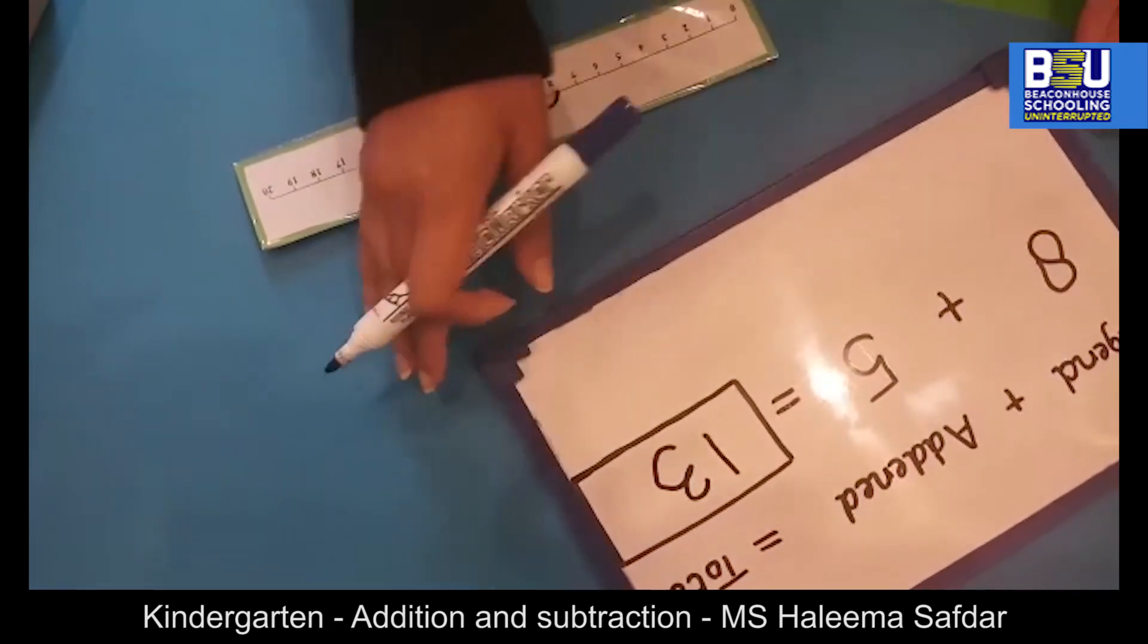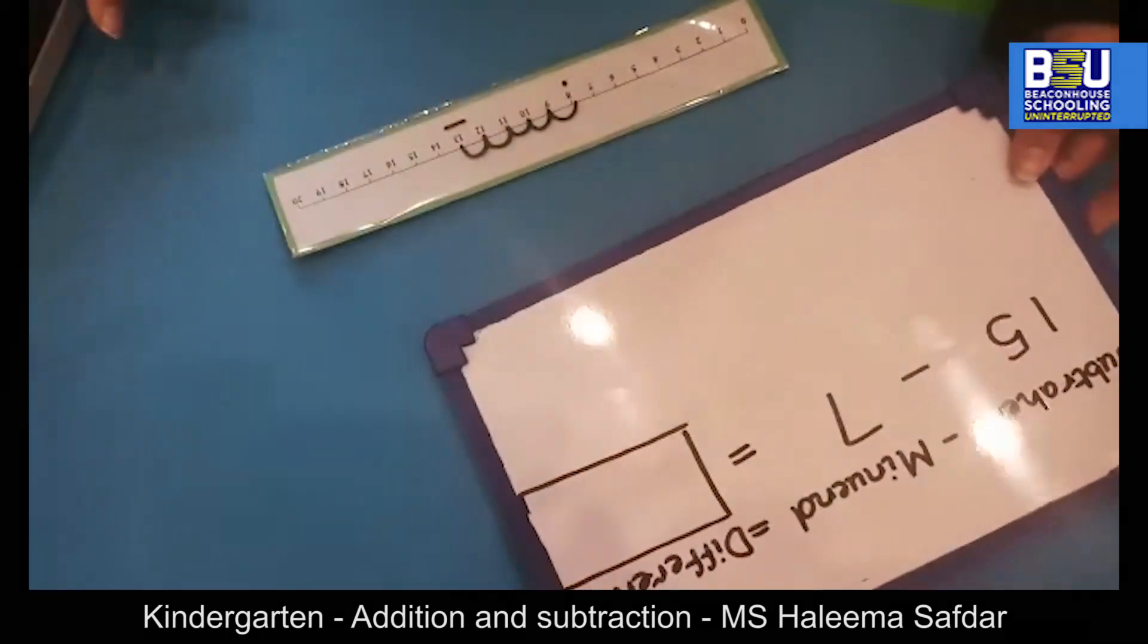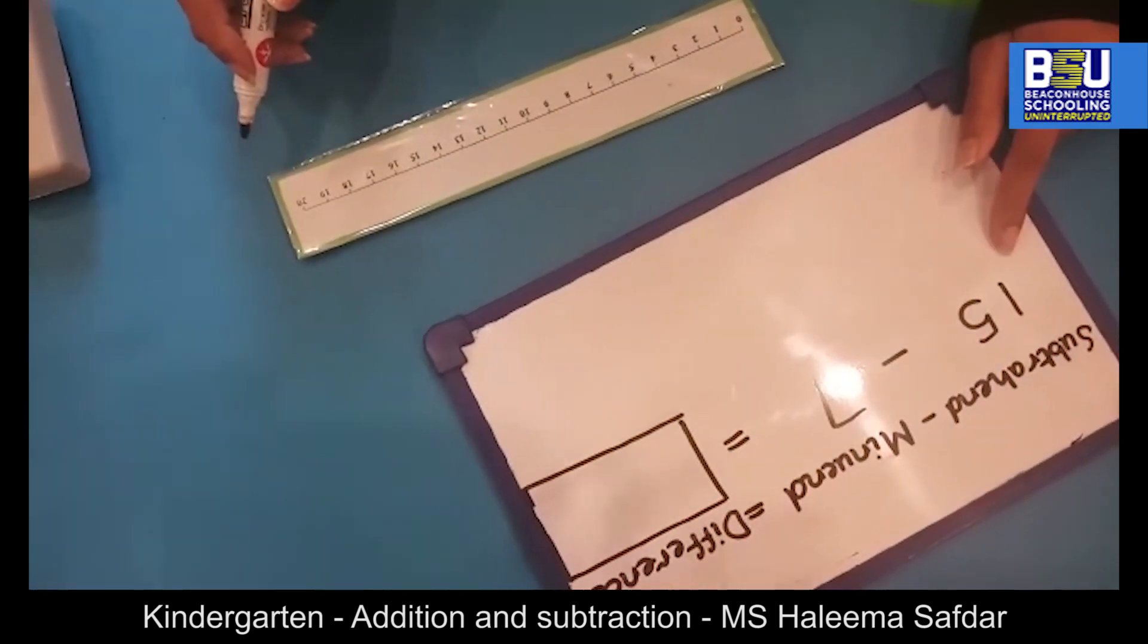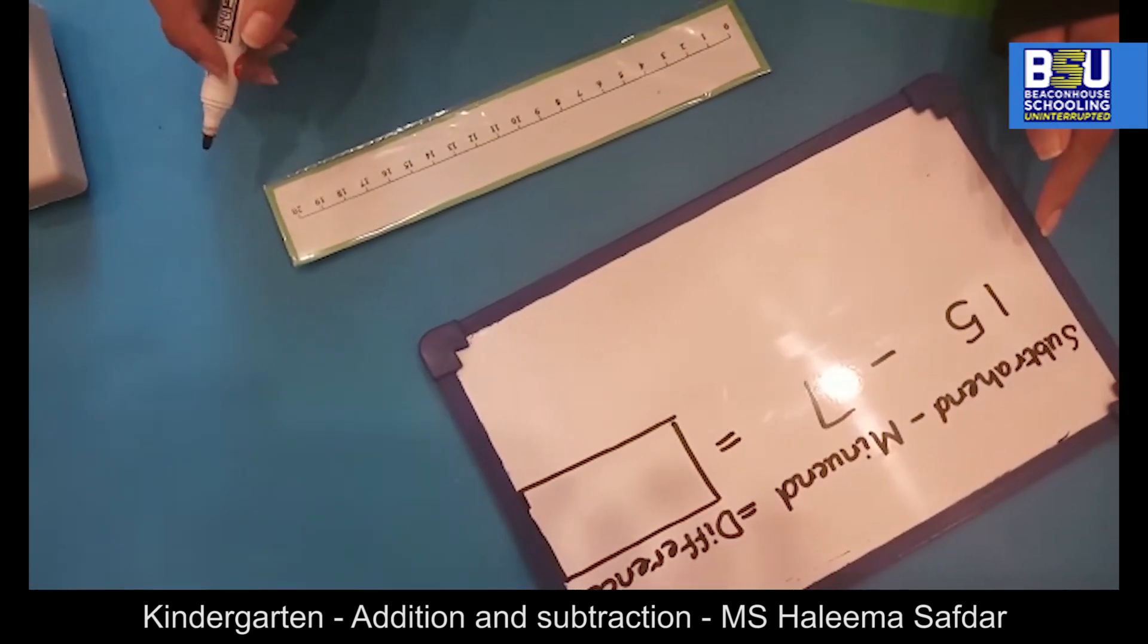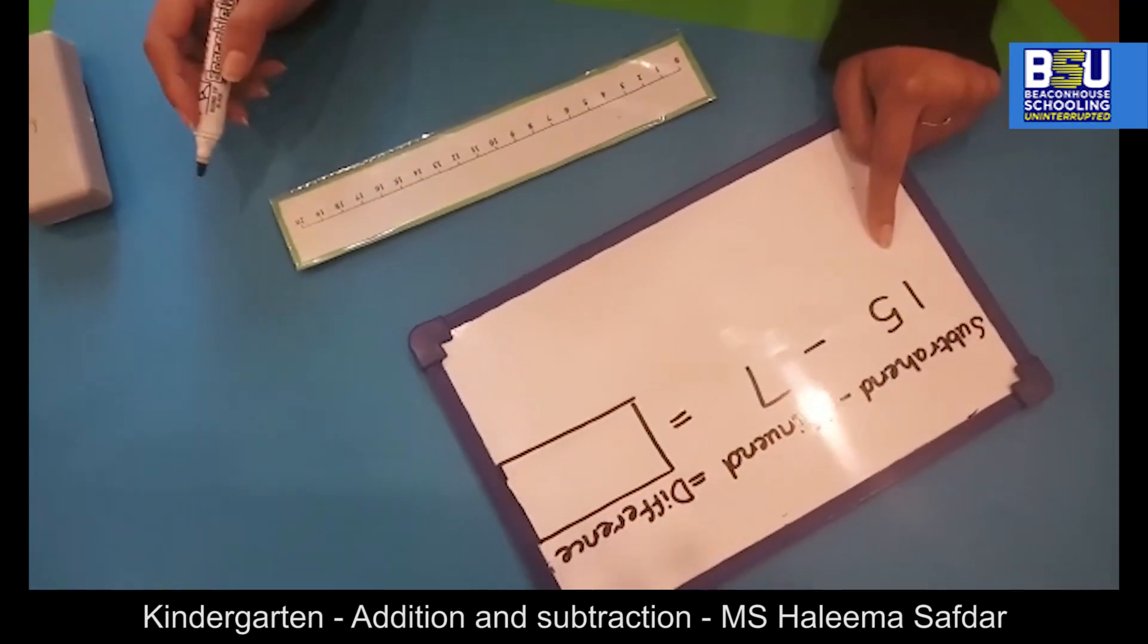Similarly, the same number line can be used to make a subtraction statement. In this statement, 15 is the subtrahend, 7 is the minuend, and we are going to find out the difference of both numbers.